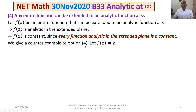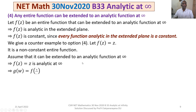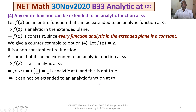We give a counter example to option 4. Let f(z) = z, which is a non-constant entire function. Assume it can be extended to an analytic function at infinity — that means f(z) = z is analytic at infinity, meaning g(w) = f(1/w) = 1/w is analytic at 0, which is not true because 1/w is not analytic at 0. So the assumption is false, and f(z) = z cannot be extended to an analytic function at infinity. Therefore option 4 is not true.